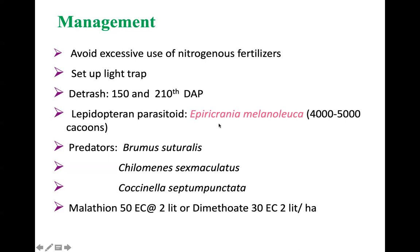It is very important to note that although parasitoids are generally associated with the Hymenoptera, Epiricania melanoleuca belongs to the Lepidoptera. 400 to 500 cocoons are released to control the insect. Predators such as Dromus saturalis, Cheilomenes sexmaculatus, and Coccinella septempunctata are also important. When the pest exceeds the economic threshold level, Malathion 50 EC at 2 liters and Dimethoate 30 EC at 2 liters per hectare can be applied.